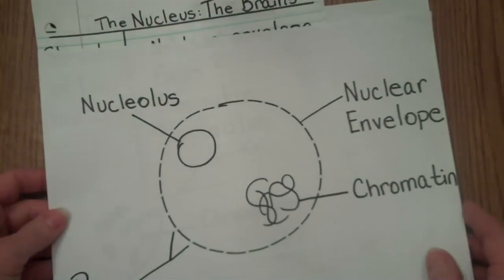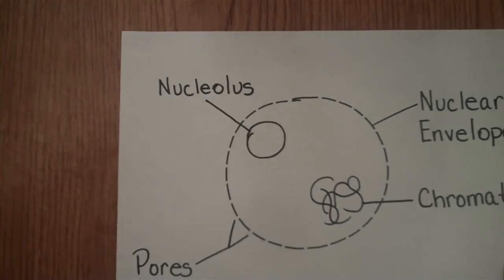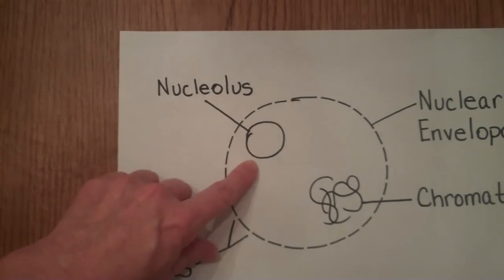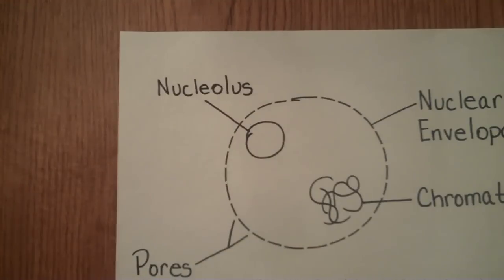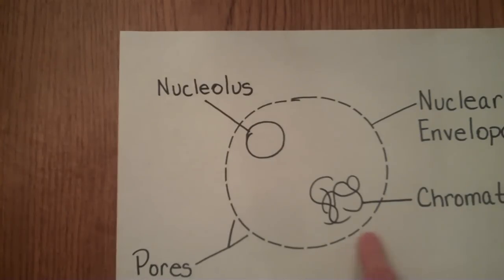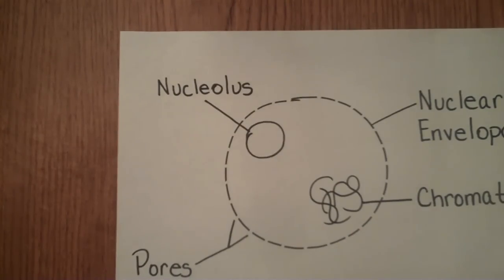The nucleus has some important structures that we need to know so we can understand how it controls the cell. They are the nucleolus, which is like a little nucleus inside the larger nucleus; the nuclear envelope; and pores that allow things to transport inside and out of the nucleus; and chromatin, which is the genetic material in a relaxed, unwound state.